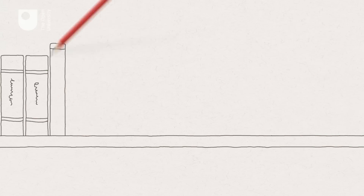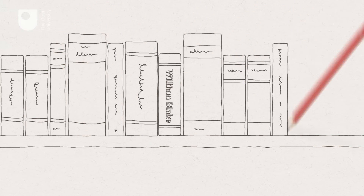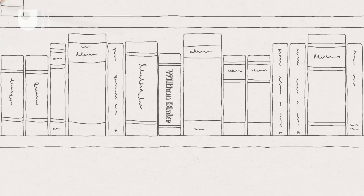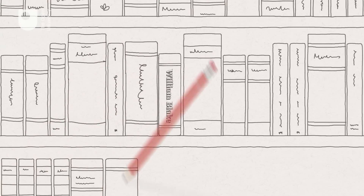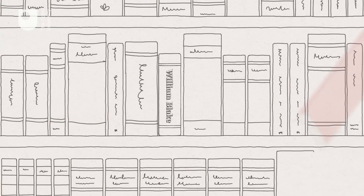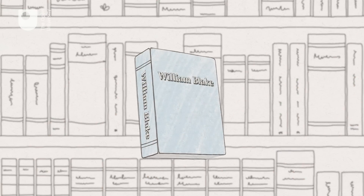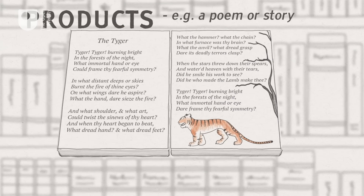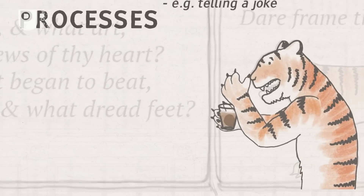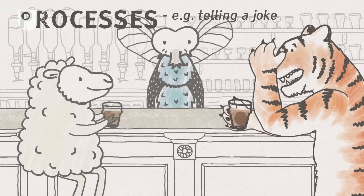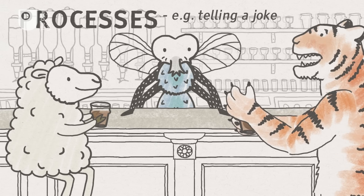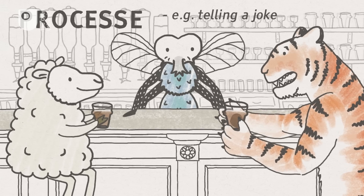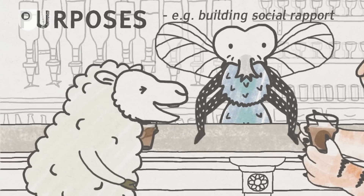So how do we take an analytical approach to creativity? We can start by thinking of it in terms of three different aspects. We can look at it in terms of its products — 'Tiger, tiger burning bright in the forests of the night' — in terms of the processes it involves — 'A lamb walks into a bar' — and in terms of the purposes to which it is put.